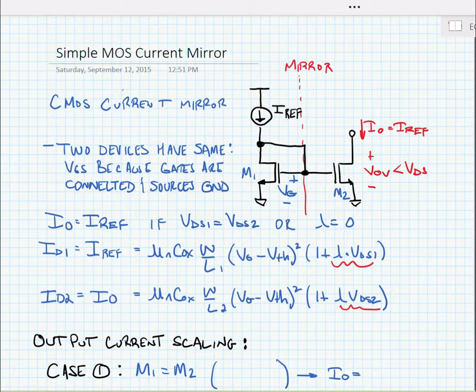Now, if lambda isn't zero or VDSs aren't exactly equal, then the currents will vary slightly. But as long as the output resistance of the transistor is high, they'll be fairly similar. Another thing that we notice is that we might be able to scale the outputs because we have control over the geometry of the transistors.